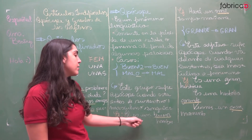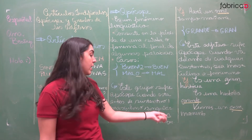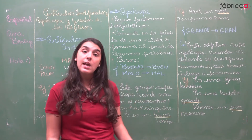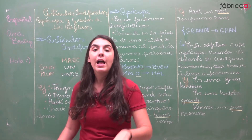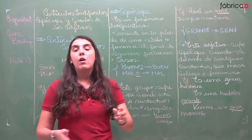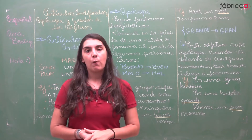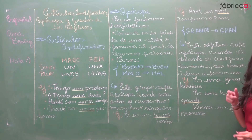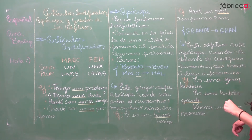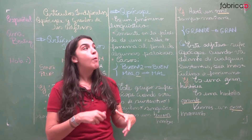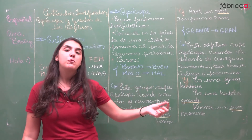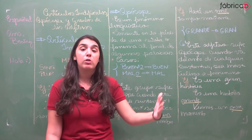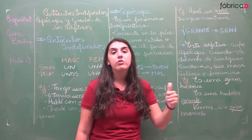São adjetivos que sofrem apócope quando vêm antes de substantivo masculino singular, sempre. Ou seja, se tem a palavra 'bueno' ou a palavra 'malo', se a palavra seguinte for substantivo masculino singular, eles perdem a vogal 'o' e ficam 'buen' e 'mal'. Por exemplo, 'él es un buen hombre' — 'hombre' é um substantivo masculino singular, então aqui o 'bueno' é apocopado. Tem como escrever essa frase de outro modo? Sim, poderia falar 'él es un hombre bueno'. Nesse caso, se eu passo o substantivo para antes do adjetivo, o 'bueno' não sofre a apócope — ele só sofre apócope antes de substantivo masculino singular.